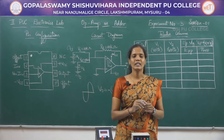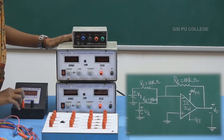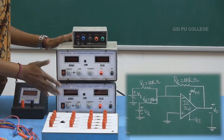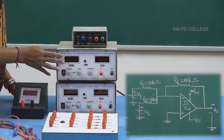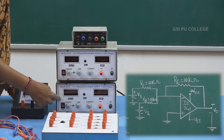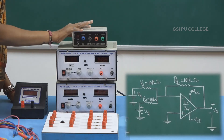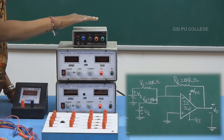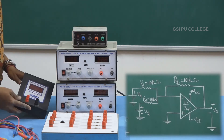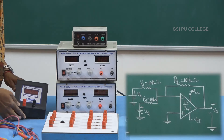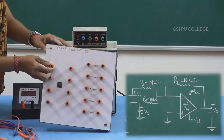Let us begin with the connections of the op-amp as an adder circuit. These are the components we are going to use: two RPS units — one considered as V1 and the other as V2 — a dual power supply to provide plus 12 and minus 12 VCC for the IC, a DC voltmeter to measure the output voltage, and the op-amp board for conducting the experiment.